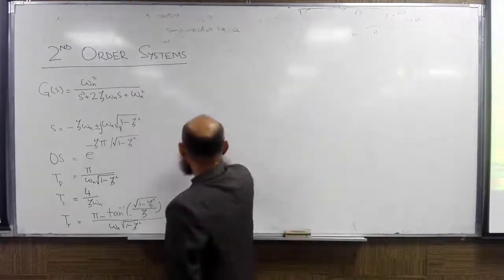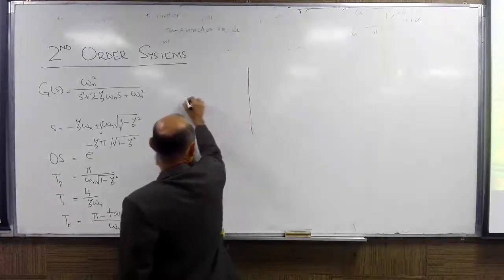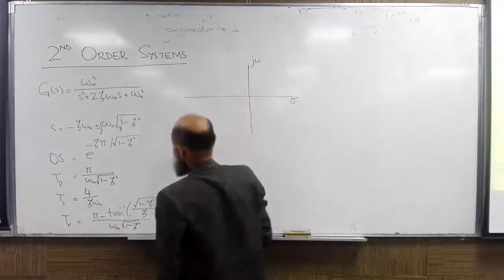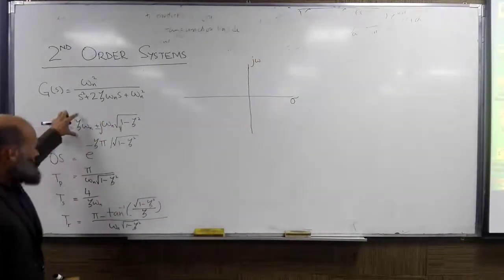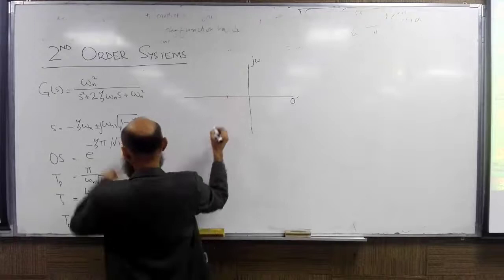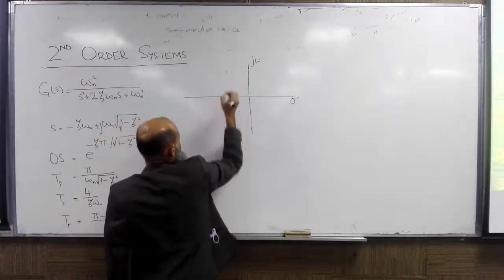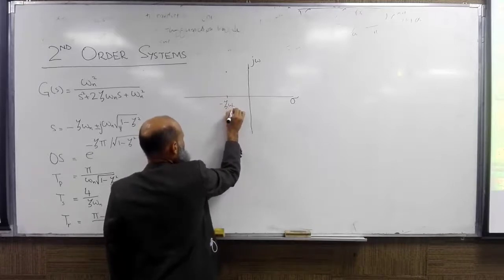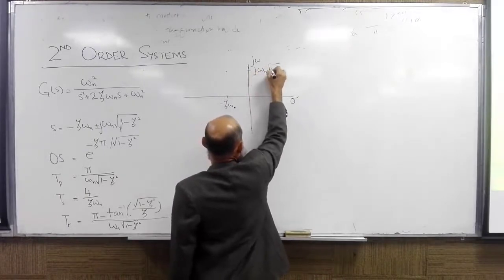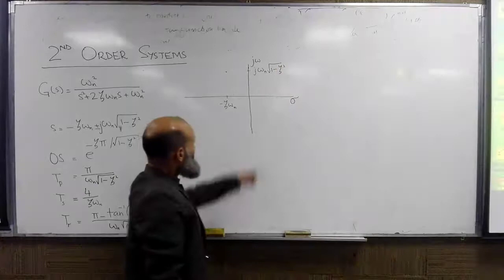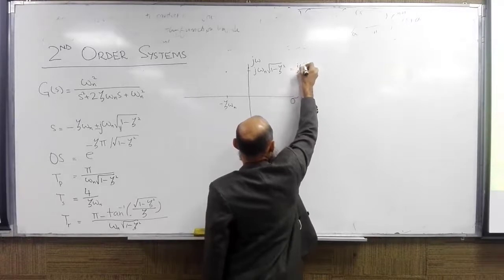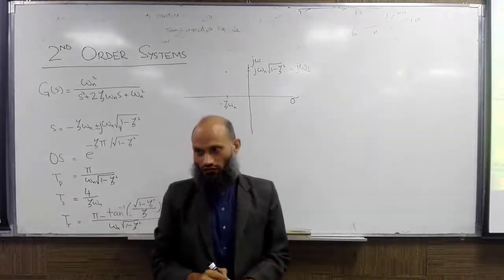The poles can be located in the s-plane, which is a complex plane with a real axis and an imaginary axis. For underdamped systems, poles are complex. The real part is equal to minus zeta omega_n, and the imaginary part is given by j omega_n times the square root of 1 minus zeta squared. This term is also written as j omega_d.